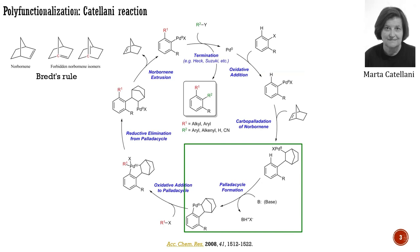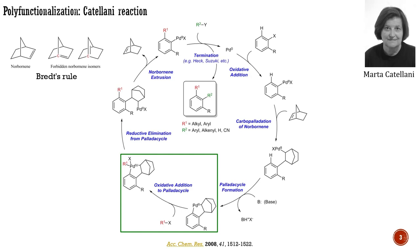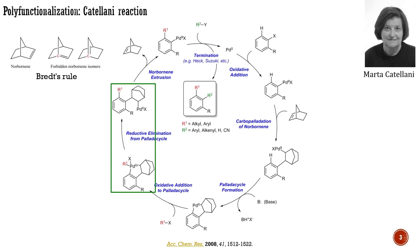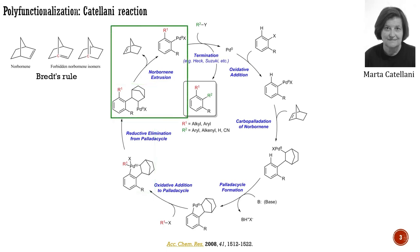Instead, the inserted norbornene directs palladium to the ortho C–H bond and initiates a regioselective C–H activation, which will be discussed in detail in the next module. The formed palladacycle can then undergo another oxidative addition with an electrophilic coupling partner present in the reaction media, forming a palladium(IV) intermediate presented here. Palladium(IV) species are normally unstable and revert to the palladium(II) insertion products to norbornene by a reductive elimination. The reductive elimination forms the first carbon–carbon bond, and if the R-group ortho to the insertion site is a proton, then the C–H activation sequence can start again and lead to the second carbon–carbon bond forming event.